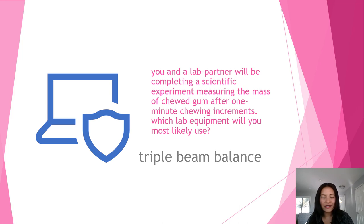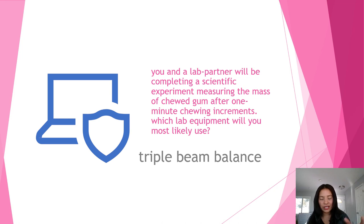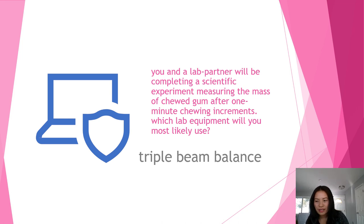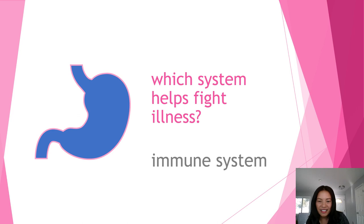When you and your lab partner are completing a scientific experiment measuring the mass of chewed gum after one-minute chewing increments, which lab equipment will you most likely use? The answer is the triple beam balance, because chewing gum is a solid object and its mass is measured by a triple beam balance, not a graduated cylinder. The immune system helps fight illness.